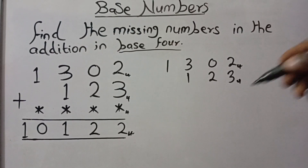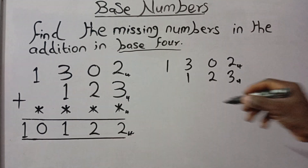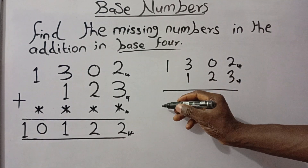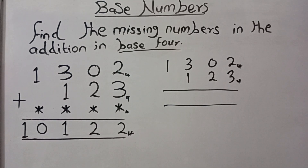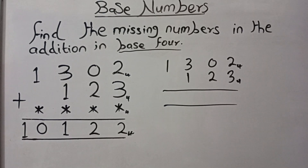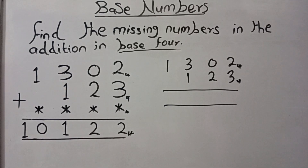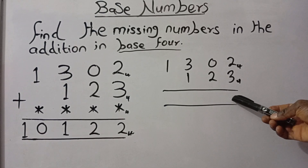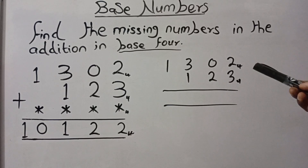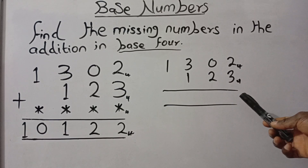So how do we get the solution? Remember that with bases, the highest digit we can find in base 4 is 3, just as we explained in our previous video. The highest digit in base 2 is 1. The highest digit in any base is always 1 less than that base number. In the case of base 4, we can never have the digit 4 — so the highest digit you can write in base 4 is 3.